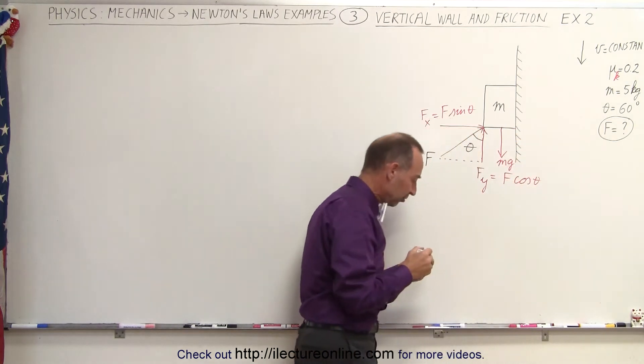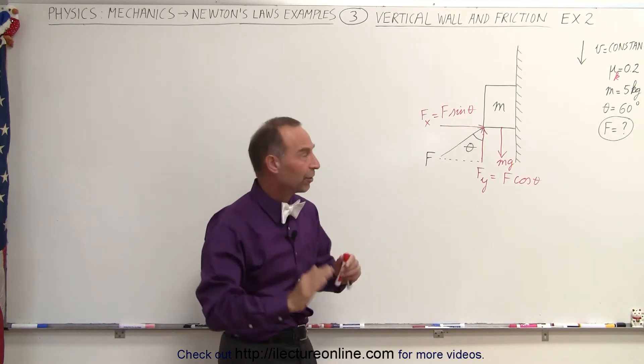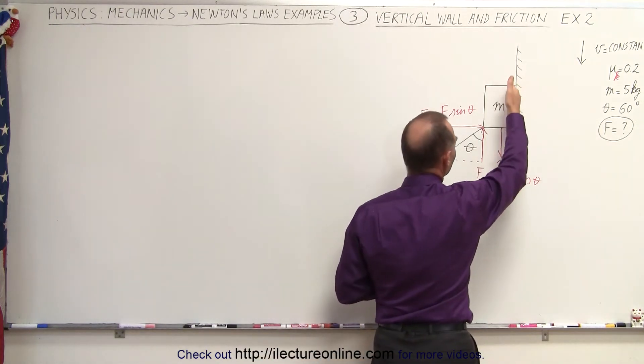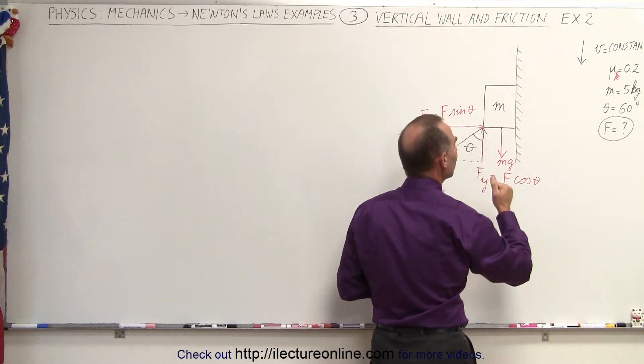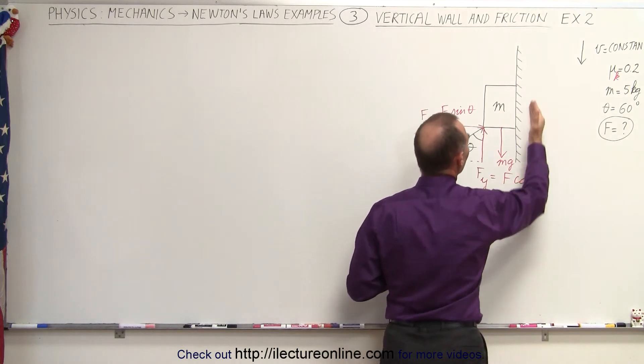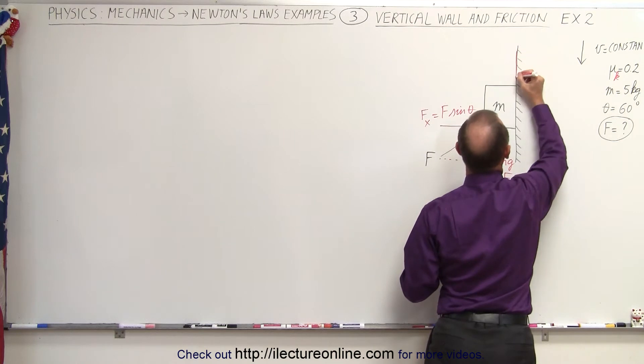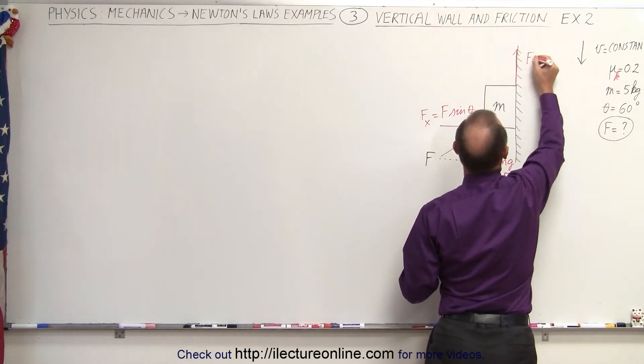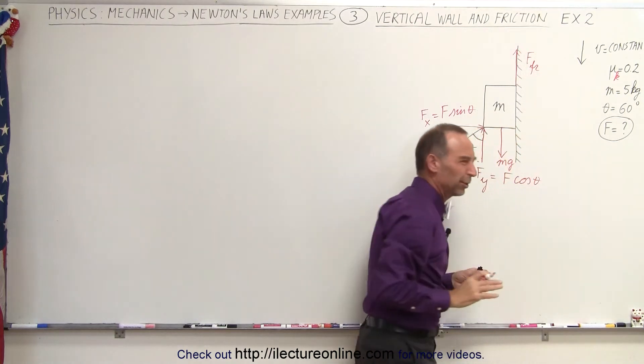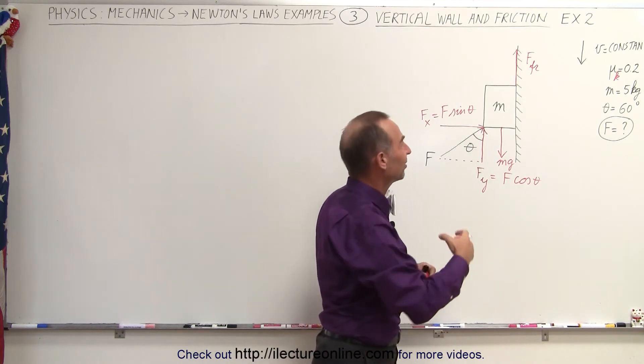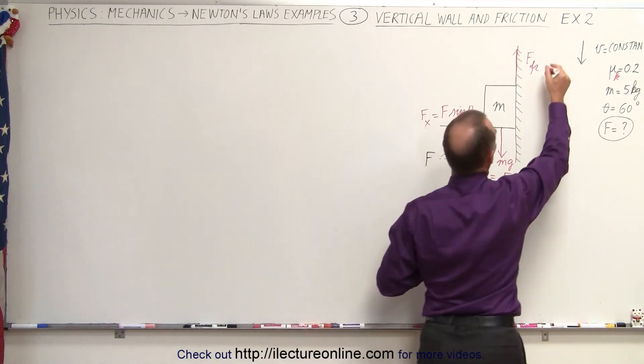And then we have the friction force. Now notice if there was no friction force, the object would be sliding downward, which means that the friction force must be in the opposite direction, and so therefore we have the friction force going upward. Or directed upward, I should say, because the friction force doesn't go anywhere. It simply is directed in the upward direction.